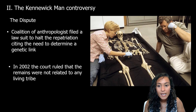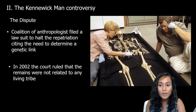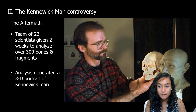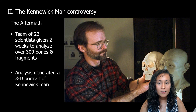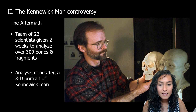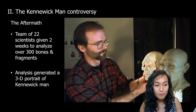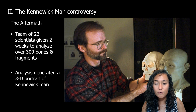In response to the tribe's repatriation request, eight anthropologists filed a joint lawsuit to halt the Army Corps repatriation process. The scientists argued that the remains had to be studied to determine if they showed any affiliation with modern tribes. After years of litigation, the scientists won, and the court ruled in 2002 that the bones were not related to any living tribe, and therefore that NAGPRA didn't apply. As a result, a group of archaeologists were given 16 days to examine the Kennewick remains, during which a team of 22 scientists scrutinized 300 bones and fragments. Analysis of the remains was used to create a 3D image of what Kennewick Man would have looked like. These studies revealed that Kennewick Man belongs to an ancient population of seafarers who were America's original settlers.